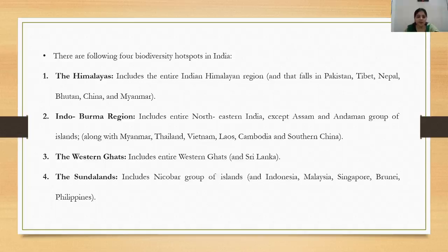The third biodiversity hotspot is the Western Ghats, including the entire Western Ghats along with Sri Lanka. In India, the Western Ghats span the states of Gujarat, Maharashtra, Goa, Karnataka, and Kerala. The fourth hotspot is the Sunda lands, which includes the Nicobar group of islands along with Indonesia, Malaysia, Singapore, Brunei, and the Philippines.